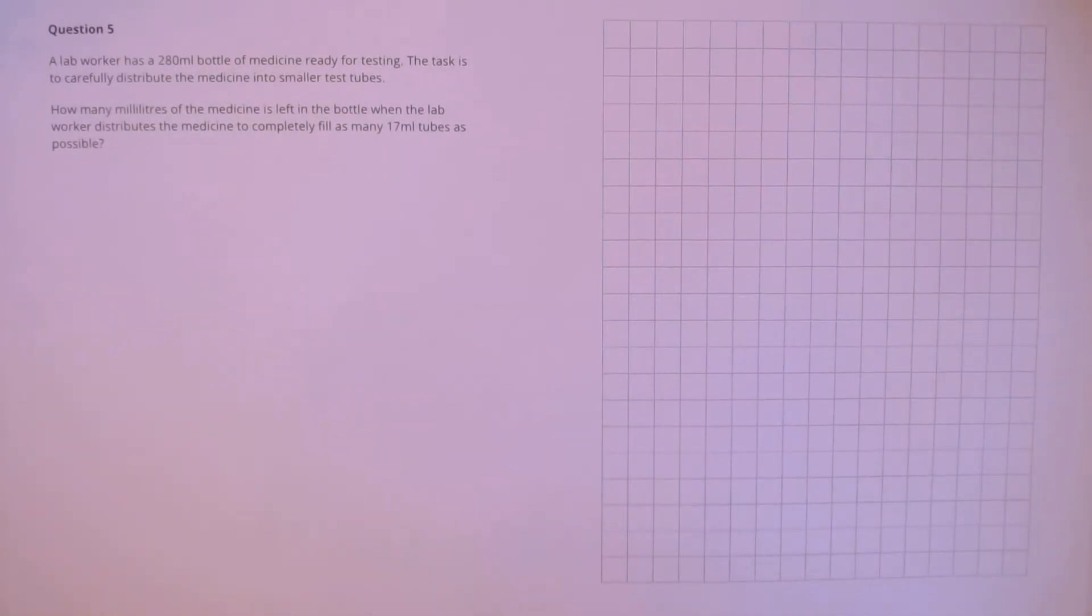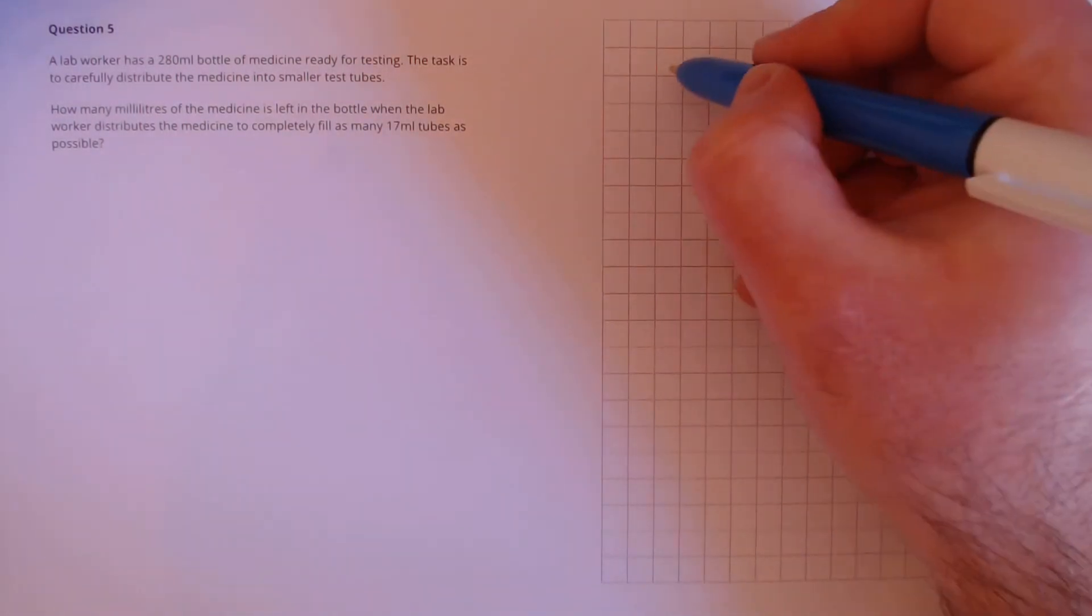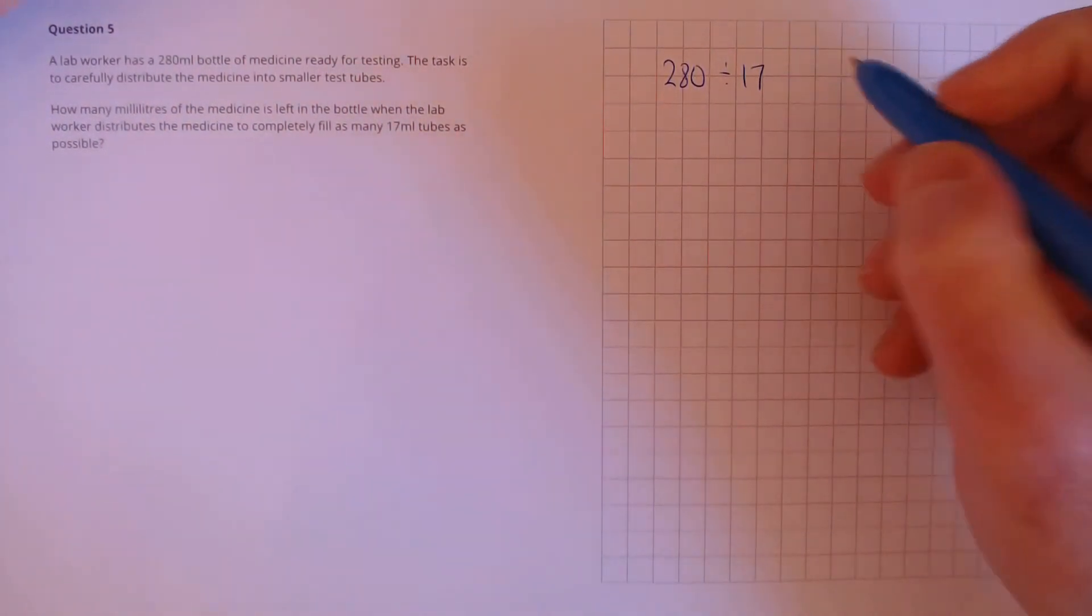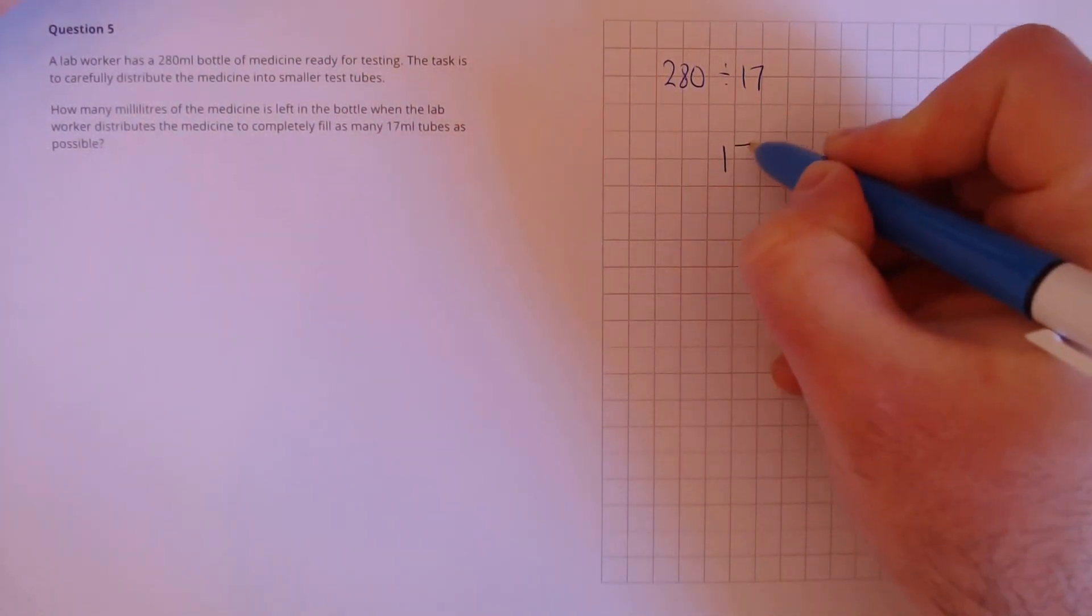Question 5. A lab worker has 280ml bottle of medicine ready for testing. The task is to carefully distribute the medicine into smaller test tubes. How many milliliters of the medicine is left in the bottle when the lab worker distributes the medicine to completely fill as many 17ml tubes as possible? Here we need to divide 280 by 17 and find out the remainder. In order to do that, we're going to use our long division.